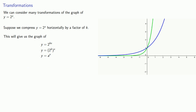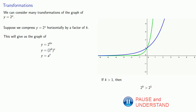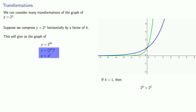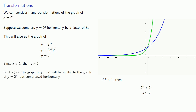Remember, we compressed this horizontally, so k is going to be greater than 1. If k is greater than 1, then 2 to the power k is greater than 2 to the 1. But 2 to the power k is what we were calling a, so that says a is greater than 2. And so if a is greater than 2, the graph of y equals a to the x will be similar to the graph of y equals 2 to the x, but compressed horizontally.